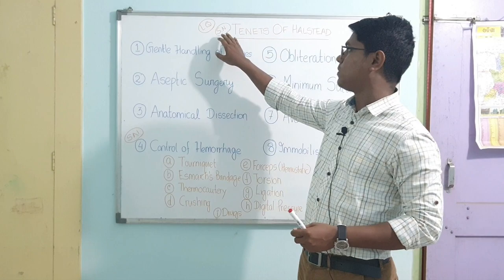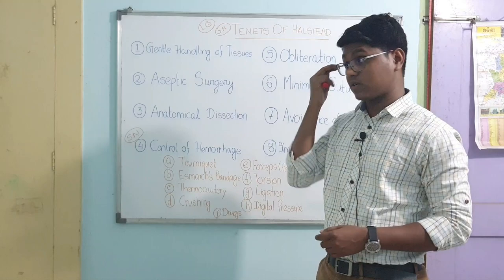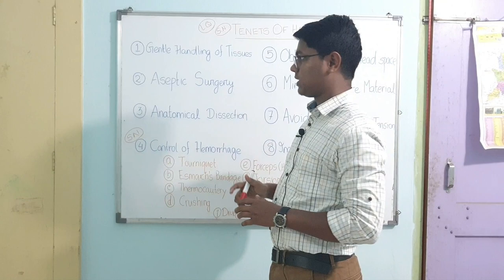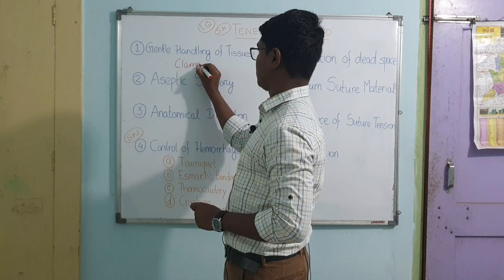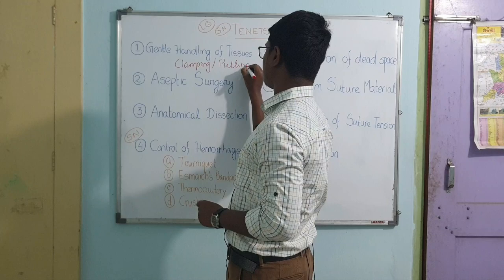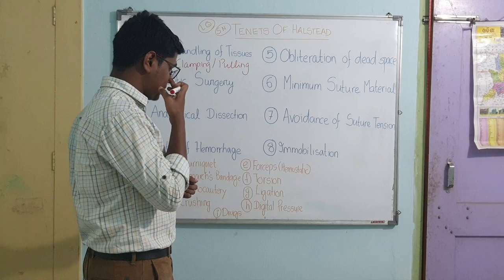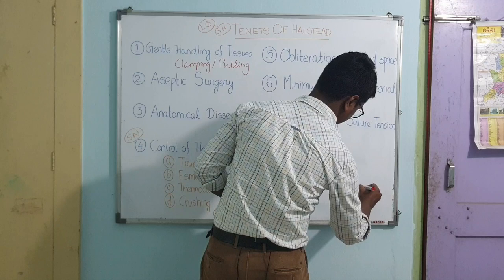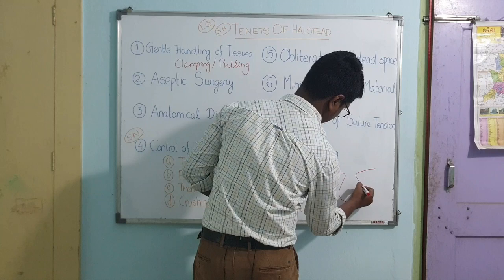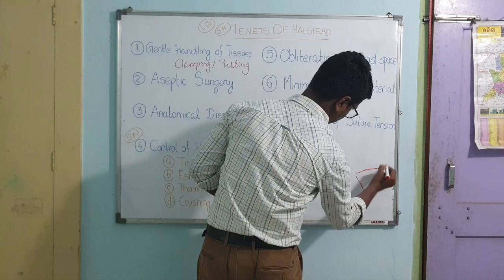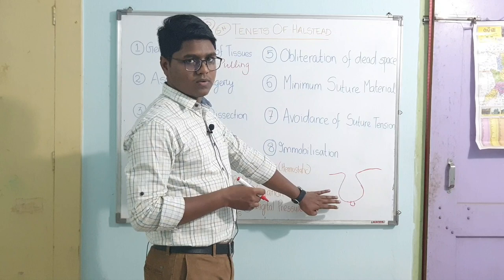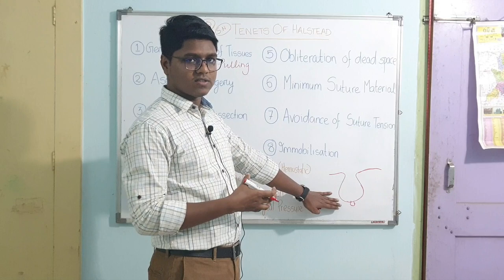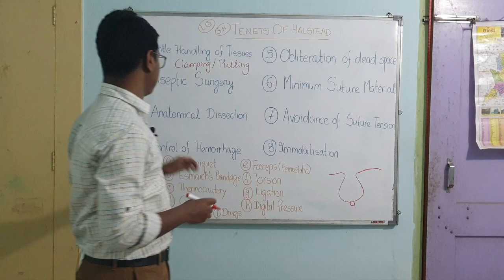Now we will go for the tenets of Halstead — this can come as a short note or long type question. The first tenet is gentle handling of tissues, meaning you should avoid unnecessary clamping or unnecessary pulling of tissues. Hard tissue and soft tissue are handled differently. Let us take an example of a mammary tumor surgery to understand all the tenets. In a soft tissue tumor like a mammary tumor, you have to be very delicate — do not unnecessarily pull, push, or clamp these tumors.